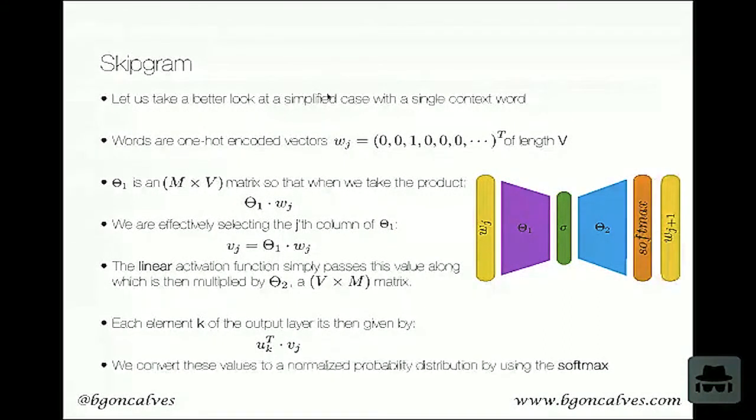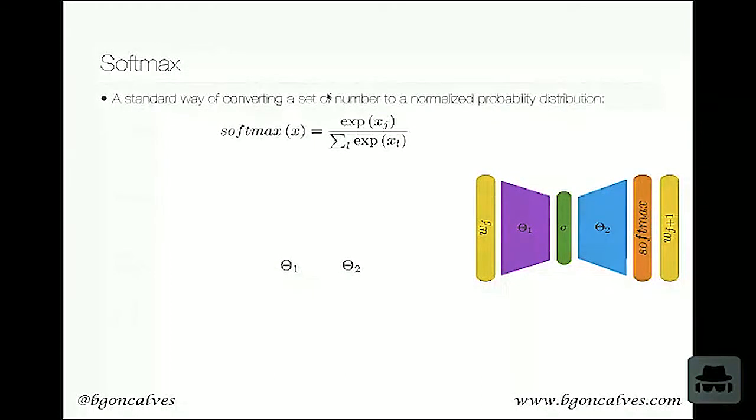And so if you think about it a little bit, the math can get a little bit complicated, but you can easily convince yourself that each element k of the output layer is then given by u_k^T times v_j. Now the v I'm using as representation of the vector that you get after you multiply theta-1 and the w_j, while the u_k values are basically one of the rows of the theta-2 matrix. And this will just bring it up together. Now in fact, what we get out of this is a series of numbers, which is basically the overlap between the word embedding on one side and the context embedding on the other side. And this will give you some number.